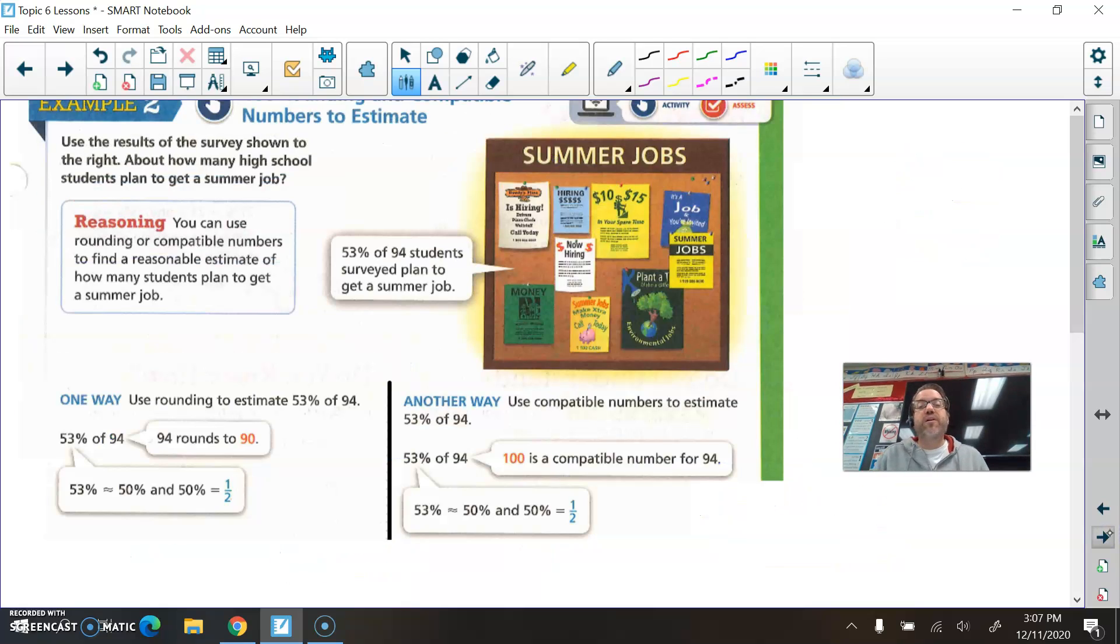All right, here's another example. Summer jobs. 53% of 94 students surveyed plan to get a summer job. Okay? So if I want to find 53% of 94, 53% is very close to 50% or one-half. But then we get to 94 and we need to ask ourselves, do we want to round that to 90? Or should we just go with 100 because it's really nice and easy to work with 100? Both are good.